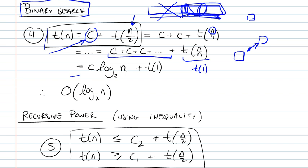So this is the expanded version of our recurrence relationship. And our binary search, we find out, is big O of log n base 2.